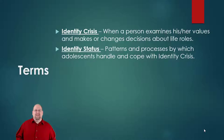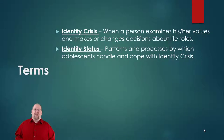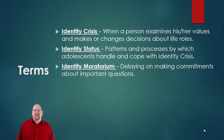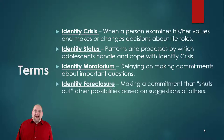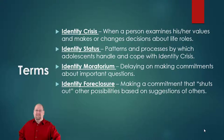Identity status refers to the patterns and processes by which adolescents handle and cope with their identity crisis. There are four processes or statuses that psychologists use to see where exactly people are on the spectrum as far as their identity. One of those four statuses is identity moratorium, which is the delaying of making commitments about important decisions. Identity foreclosure is when you are making commitments that shut out any other possible possibilities or plans available to you in the future — you are set in one way and nothing's going to change that.